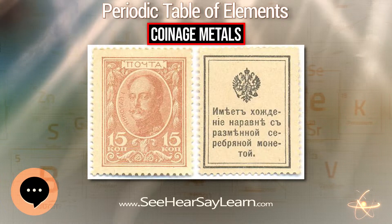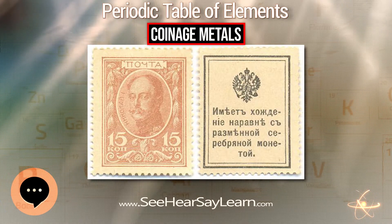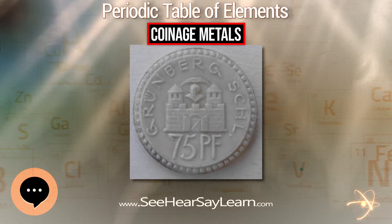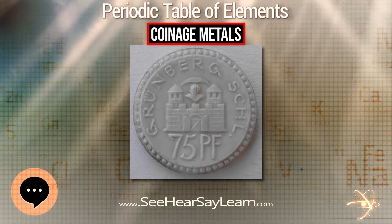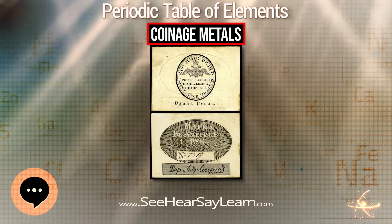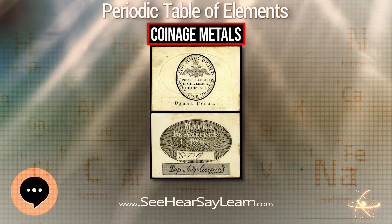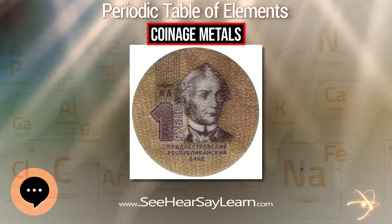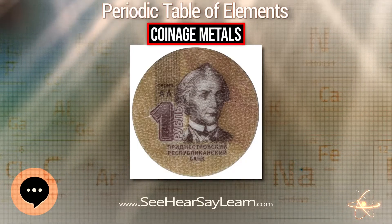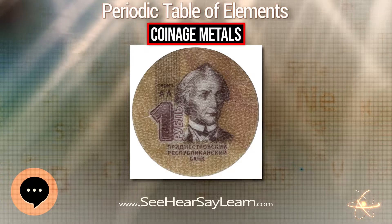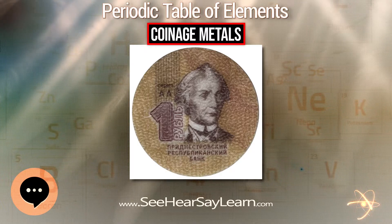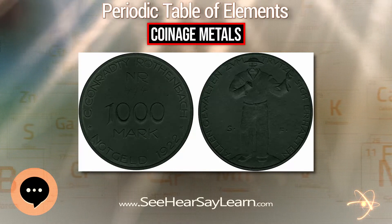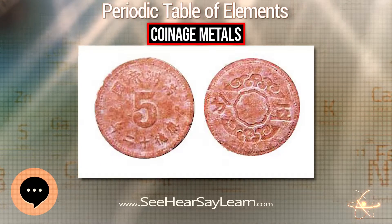Coins intended for circulation have some special requirements based on the conditions they will encounter. For example, a coin may be in circulation for up to 30 years and so must have excellent wear resistance and anti-corrosion properties. Achieving this goal necessitates the use of base metal alloys.